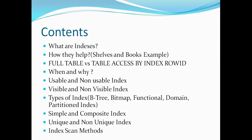We are going to talk about what indexes are and how they help, when and why we should use them. You can categorize indexes based on certain criteria: we have usable and non-usable indexes, visible and non-visible indexes. Then we have the B-tree index, which is the default index — if you don't specify any keyword while creating an index, Oracle creates a B-tree index. Then we have bitmap and bitmap join index, functional index, domain index, partition index, and simple and composite indexes based on the number of columns used.